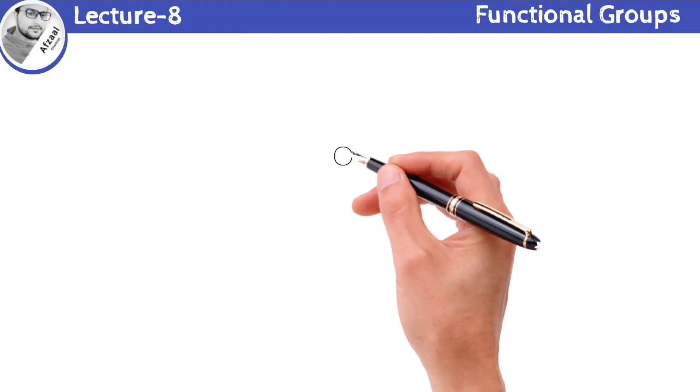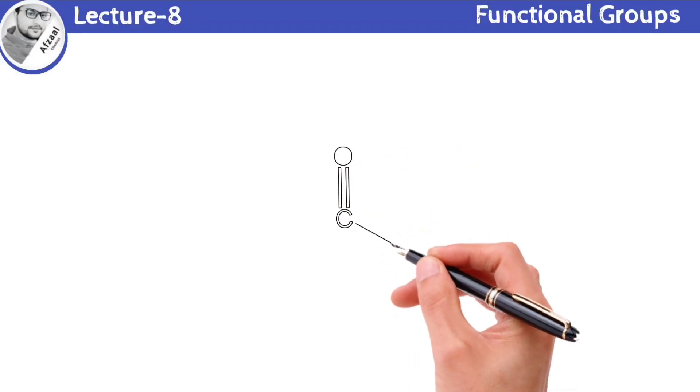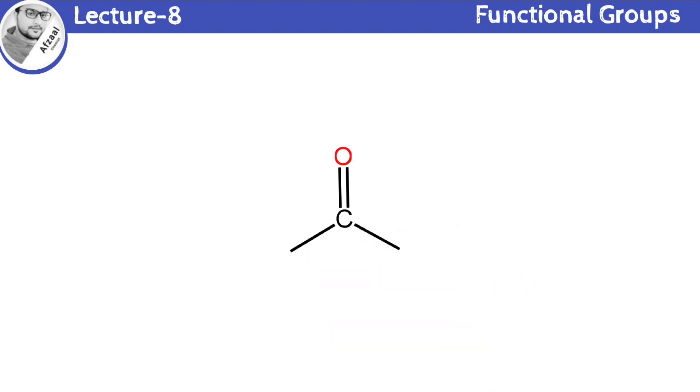Let me describe some functional groups that all have a common structural unit known as carbonyl group. Different structures attached on both sides of the carbonyl group determines the nature of functional group.